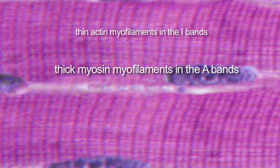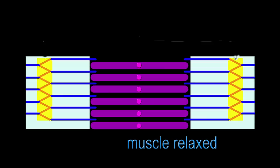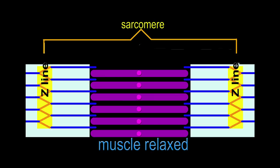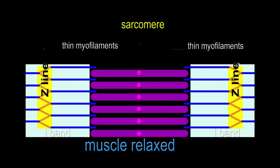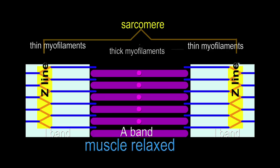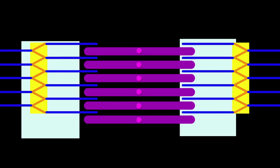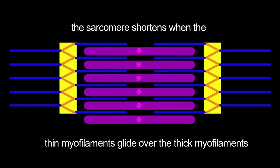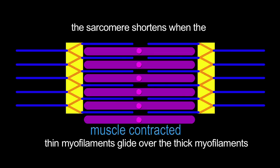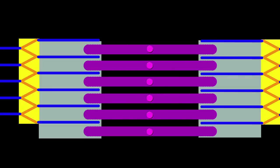Now let us look at a diagram to explain the mechanism of muscle contraction. In the relaxed state, the sarcomere extends from one Z-line to the next Z-line, incorporating an I-band with thin myofilaments on either side of the A-band with thick myofilaments. When the muscle fibre contracts, the Z-lines all pull towards one another, pulling the thin myofilaments over the thick myofilaments. The light I band disappears and the sarcomere is shortened. It is important to note that the actual myofilaments do not shorten during muscle contraction — they merely glide over one another.